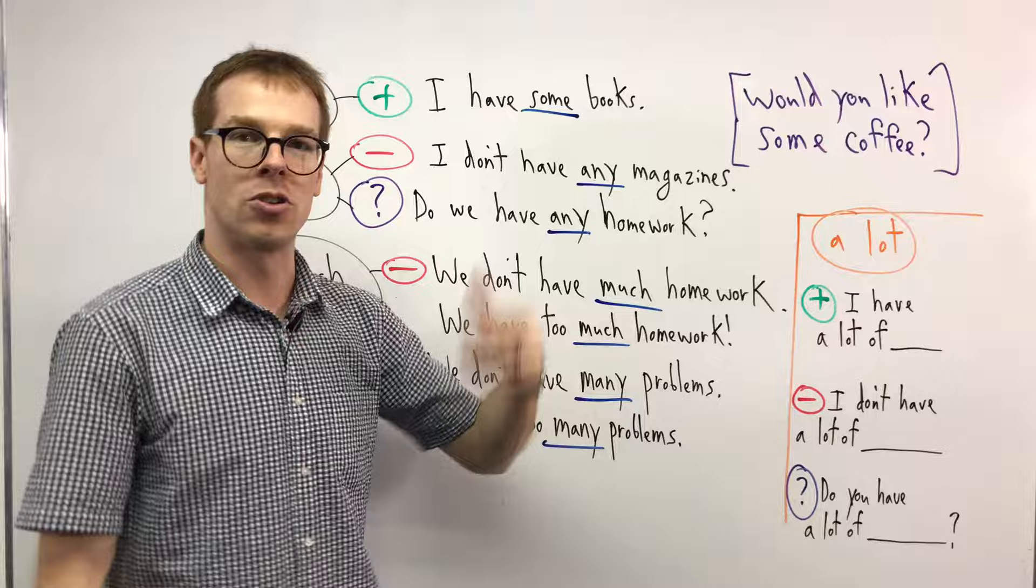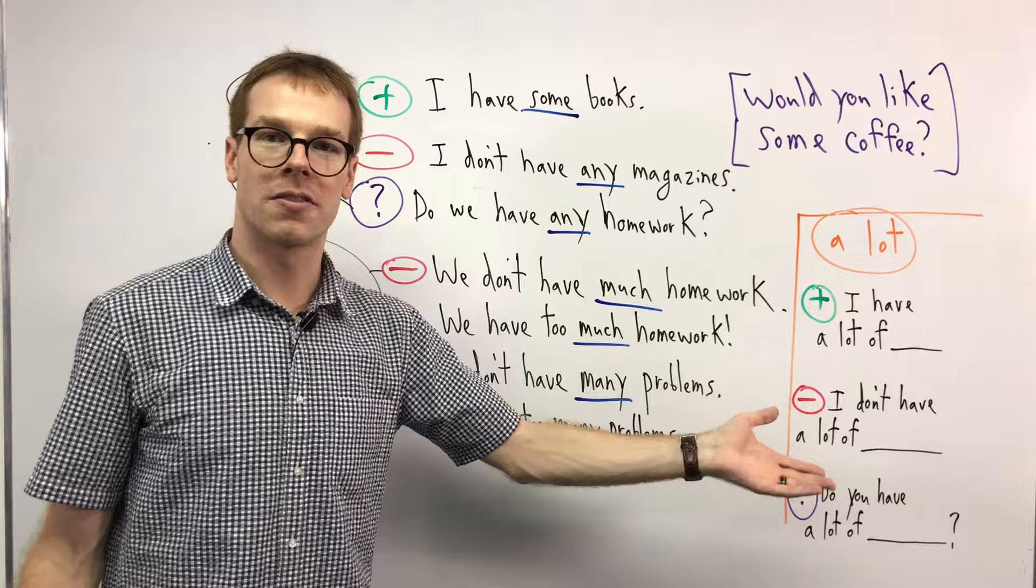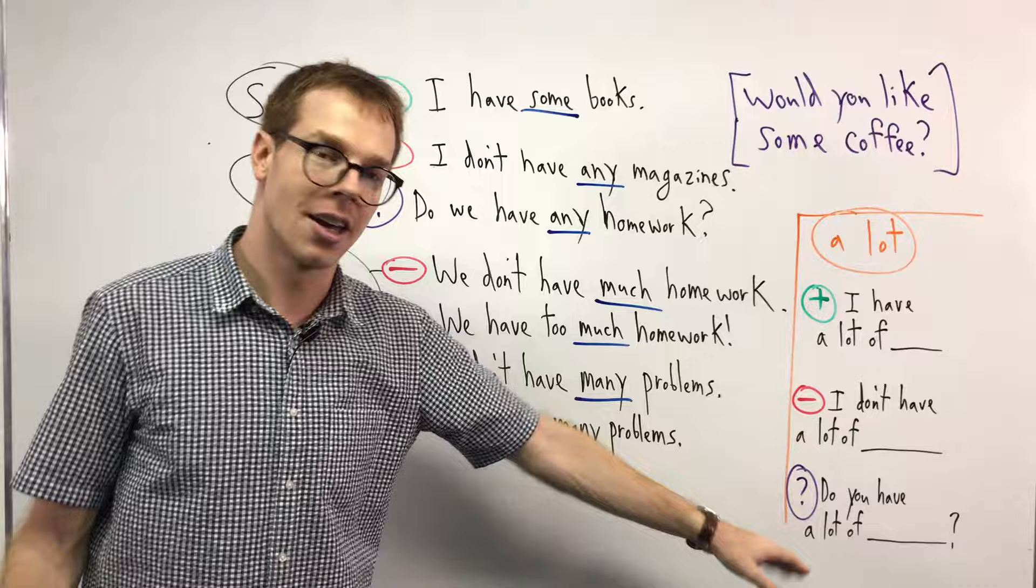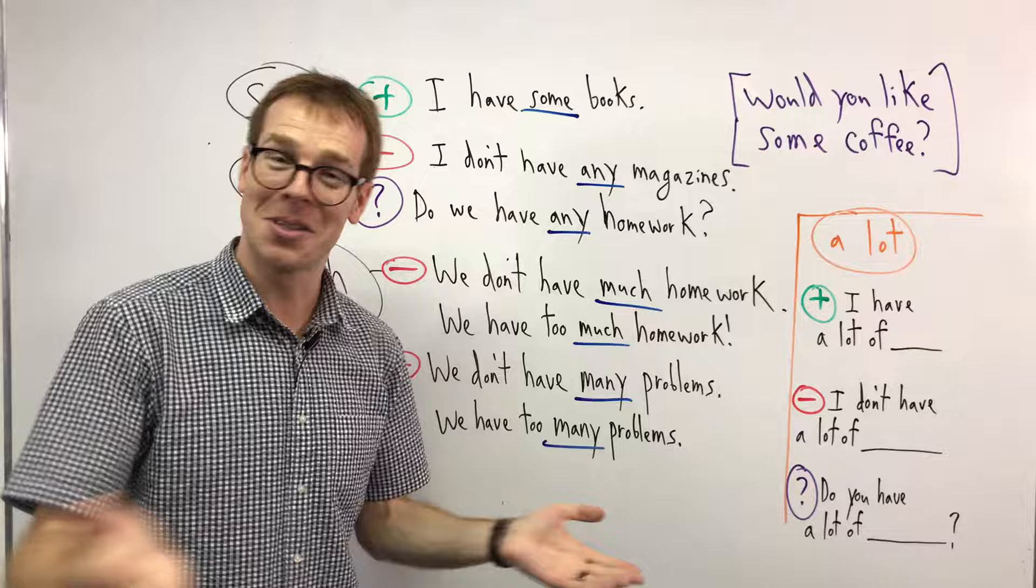We can use it in negative. We don't have a lot of time. We don't have a lot of money. We don't have a lot of apples. Whatever you want. Any noun, it can be countable, uncountable. It can work with a lot. And same for questions. Do you have a lot of homework? Do you have a lot of problems? Do you have a lot of time? All of those are okay for a lot.